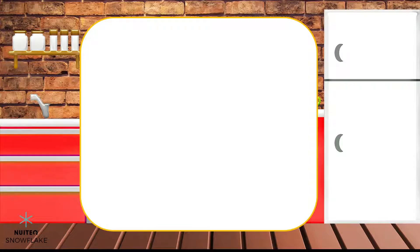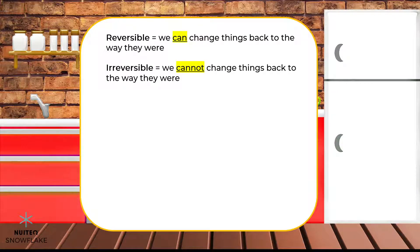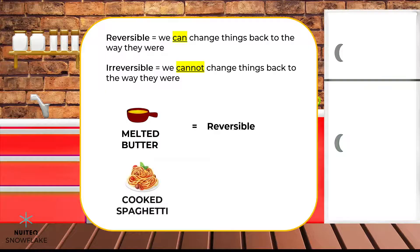So, some changes we make to things are reversible. This means that we can change things back to the way they were before. Some other changes are irreversible — that means that we cannot change things back to the way they were before. Adding heat to butter and water makes them change, but removing heat changes them back, so the change is reversible. Adding heat to the spaghetti makes a change, but removing heat doesn't change it back. The change is irreversible.